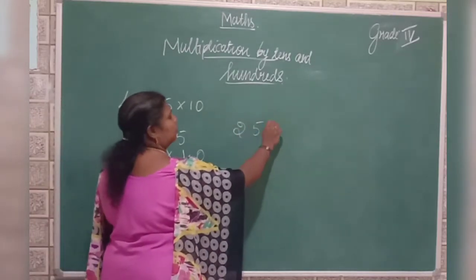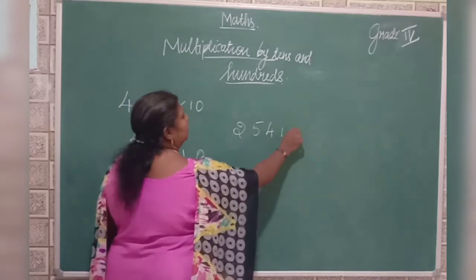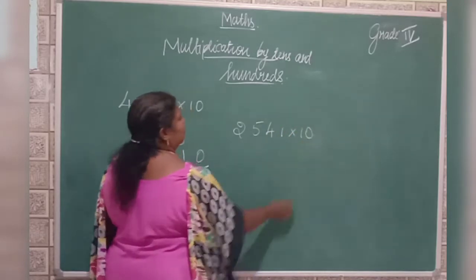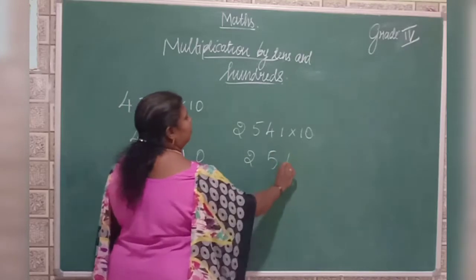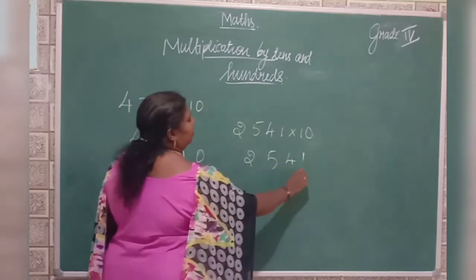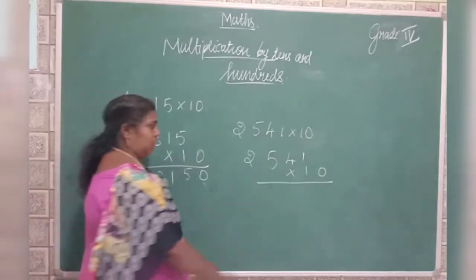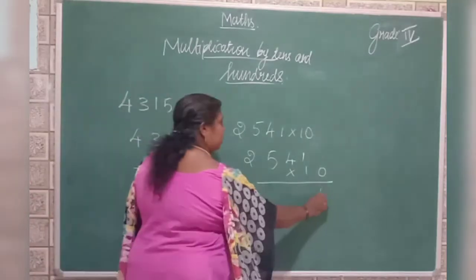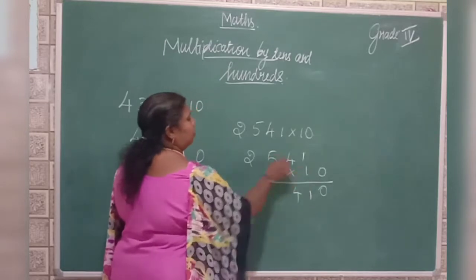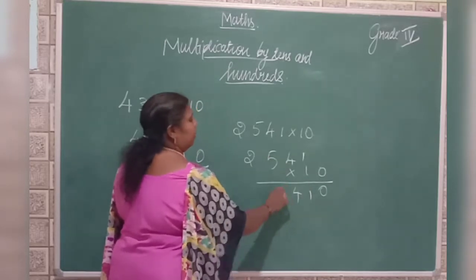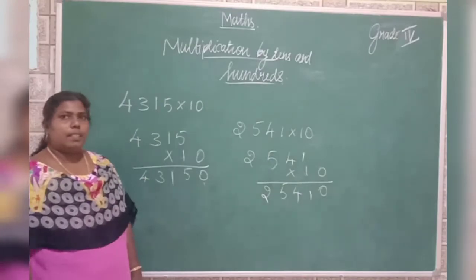See one more example: 2441 into 10. Here also, you can use the same method. Zero is here. One times 1 is 1, one times 4 is 4, one times 4 is 4, one times 2 is 2.